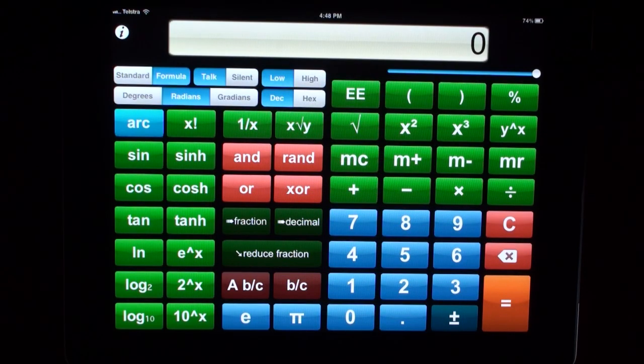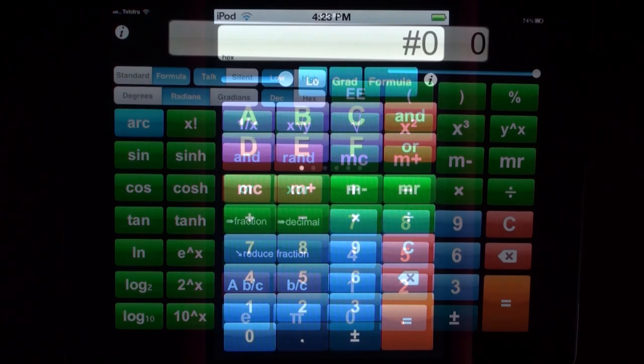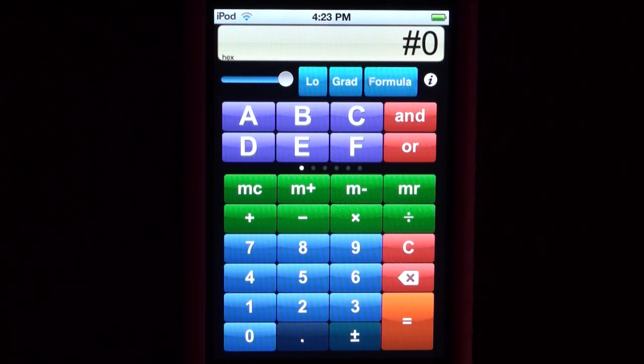This is how the buttons will automatically position themselves when you have your calculator rotated into landscape. This is what your calculator will look like on the smaller screen of the iPod or iPhone. As you can see, it is still in large easy to read buttons, which you can access more of by sliding through six panels of more advanced operators.